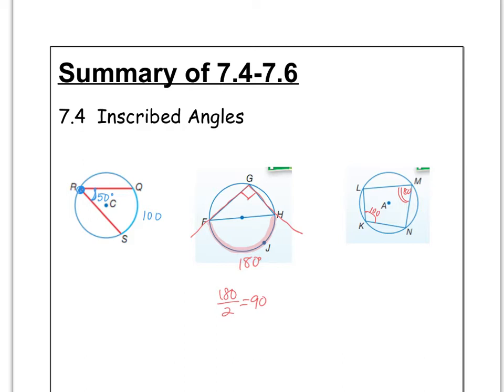Same with angle L and N. Let me get a different color. Let's say angle L is, I don't know, 85 degrees. Then if you do 180 minus 85, you get 95, so N would have to be 95. Opposite angles add up to 180.